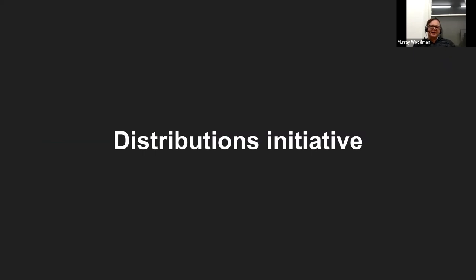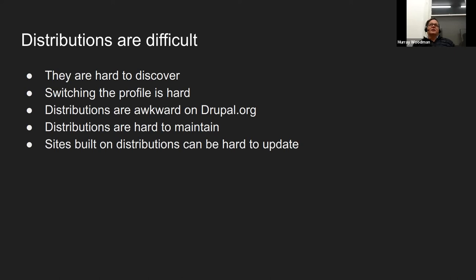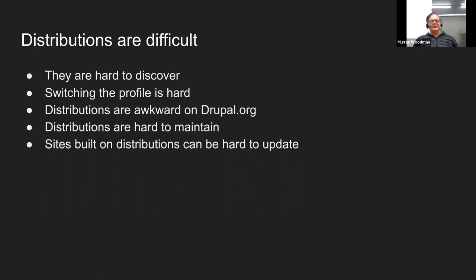So let's move on to the Distributions Initiative — where we're at today. This is an active area in the Drupal community at the moment. It's not a formal initiative yet, but it certainly seems to be shaping up to be one. Alex Pott is organizing a lot of it, and there's a link there for you to see the roadmap and what work is being done. Firstly, the roadmap identifies all of the difficulties with the distributions that currently exist — all the things we've been talking about. One of the big ones is that if a distribution is in a profile, it's very difficult to change — it's baked into the whole system.